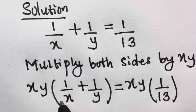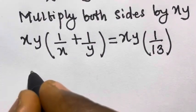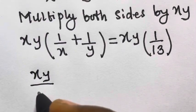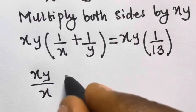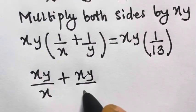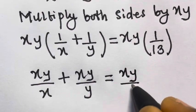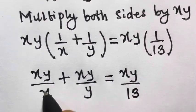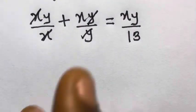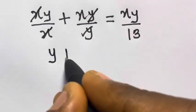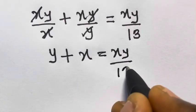So from here, we use this to expand this bracket. We have xy times 1 over x, which gives us xy divided by x. And xy times 1 over y gives us xy divided by y. So on the right side, we have xy divided by 13. You can see that this x will cancel this x and this y will cancel this y. So we'll have y plus x equals xy divided by 13.